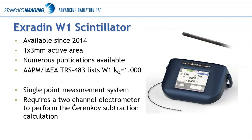One of the key publications recently is the IAEA and AAPM joint publication on small field dosimetry — Technical Report Series 483 — which shows the W1 in a number of their tables. In every single one, it is the only detector that across the board for every field size, every energy, and every machine shows a KQ value of one. This was designed to be just a single point measurement system.